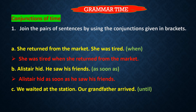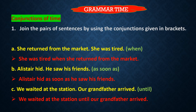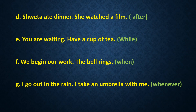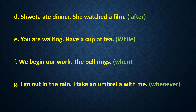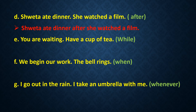Part C: 'We waited at the station. Our grandfather arrived.' The conjunction given in the bracket is 'until.' Joined sentence: 'We waited at the station until our grandfather arrived.' Next, part D: 'Shweta ate dinner. She watched a film.' The conjunction given is 'after.' Joined sentence: 'Shweta ate dinner after she watched a film.'